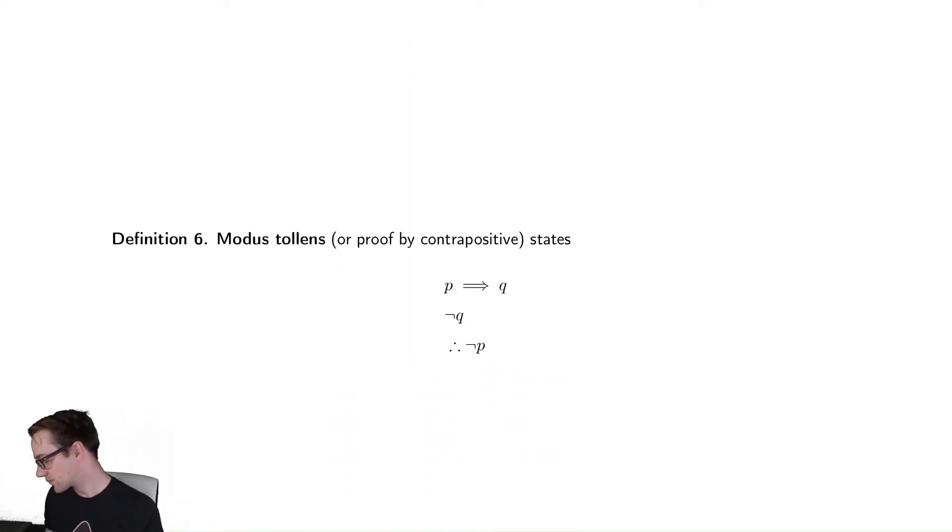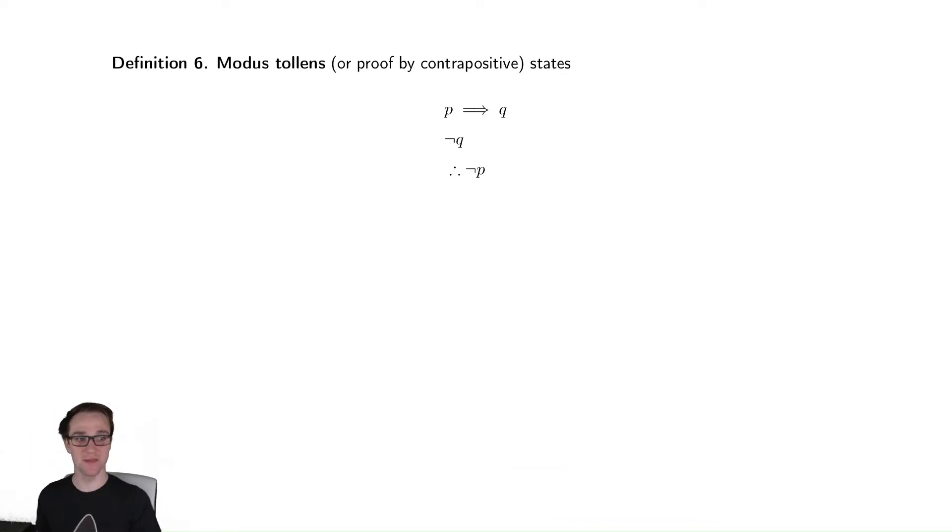Our next type is proof by contrapositive, or modus tollens. This is, I again tell you that P implies Q, but then you discover that not Q is true. And by contrapositive, we know that P implies Q is exactly the same as not Q implies not P. Therefore, if we know not Q, we know that not P must also be true. So this is the exact same thing as above, but we're adding in the fact that we know that an implication is always the same as the contrapositive of that implication.